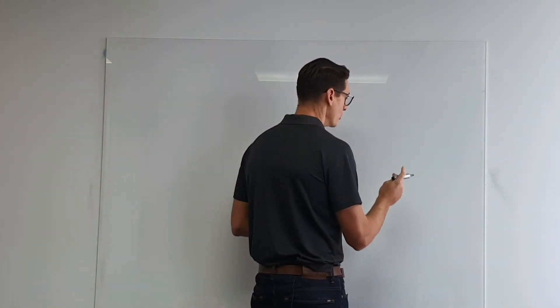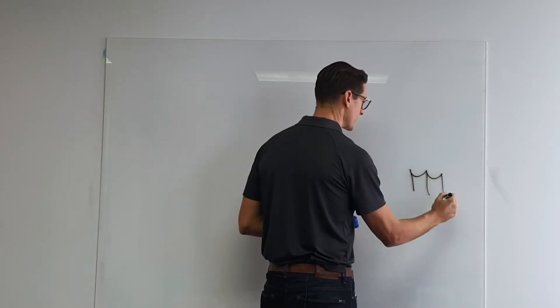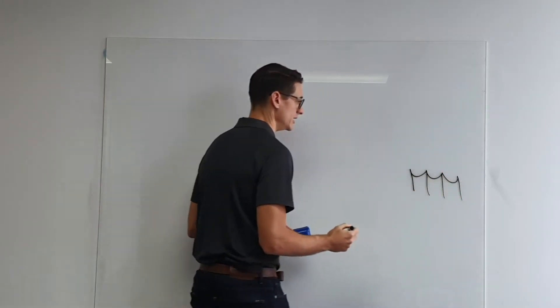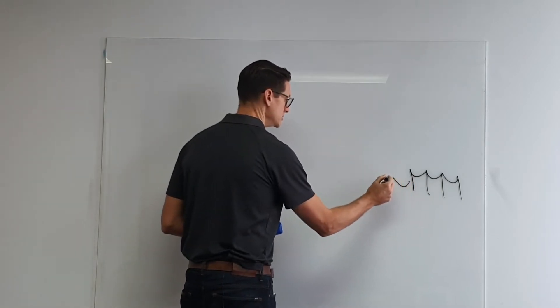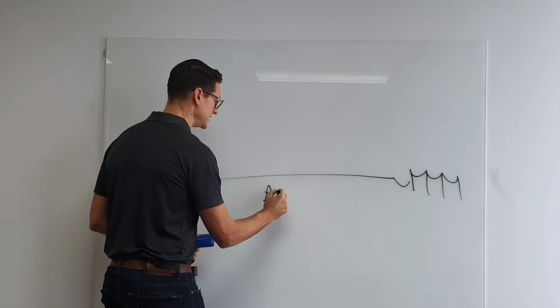So we have ourselves the Western Power grid. Here it is there, and your home connects into this grid via what we would call the AC line.